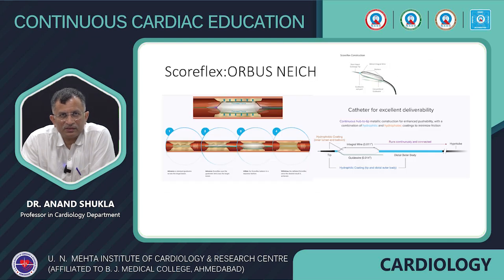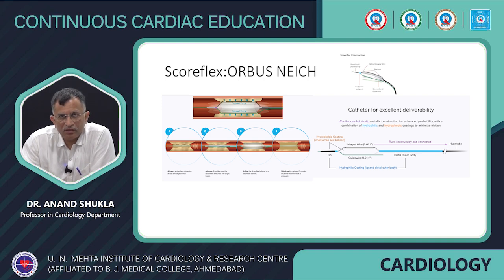Next is the Scoreflex balloon. The Scoreflex uses the principle of a parallel wire — a body wire and an impression balloon — with a short tip monorail system. One wire runs along the outer part of the balloon, so the distal park wire as well as the balloon embedded with that wire both work together to create a cutting effect.